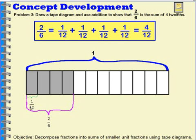So, now I have one-twelfth here, one-twelfth here, one-twelfth here, and one-twelfth here. So, how many twelfths do I have? Four-twelfths. So, this tape diagram now represents this number sentence.